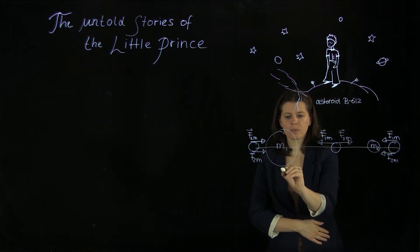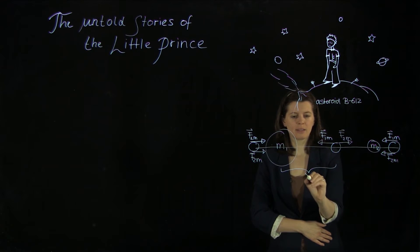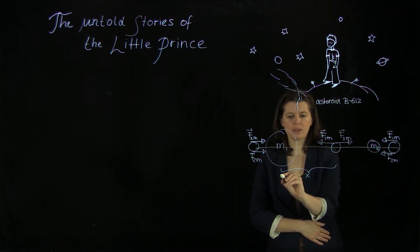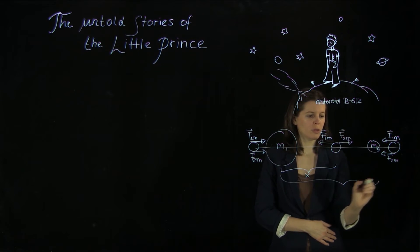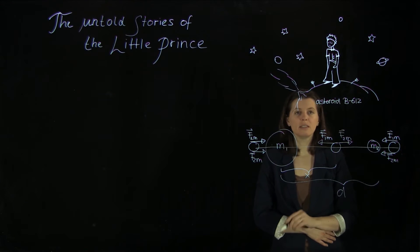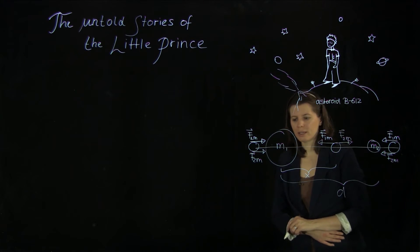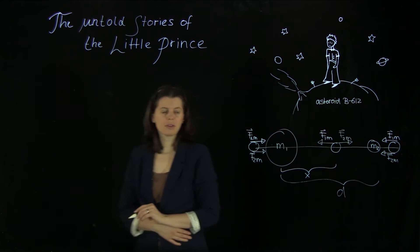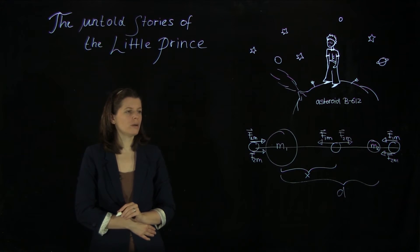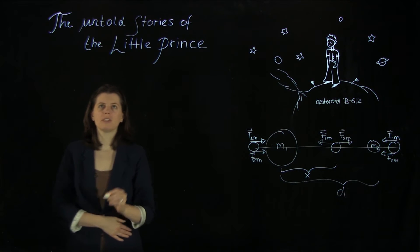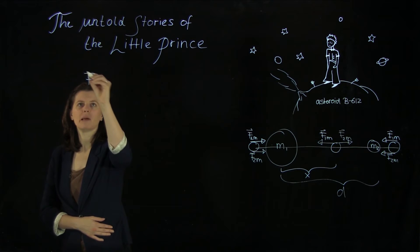And so we're going to label this distance here x. And we're going to say that the two bodies here are a distance d apart. All right. How are we going to go about this? Well, we have to apply the universal law of gravitation in our F equals ma analysis.